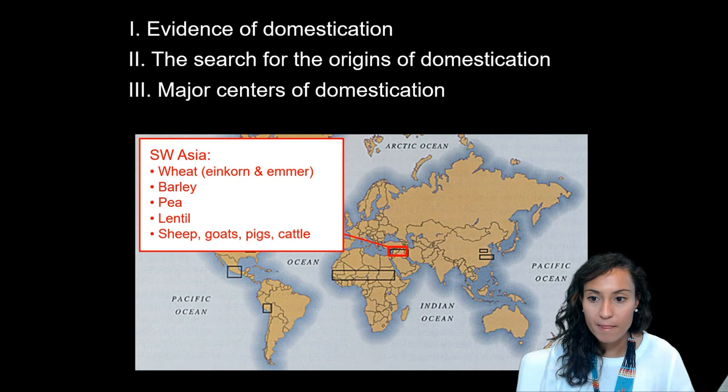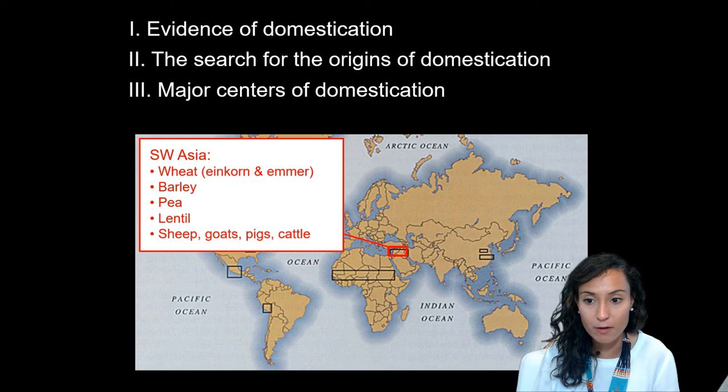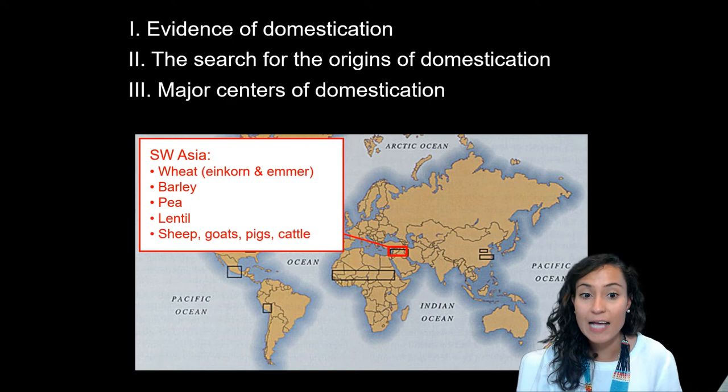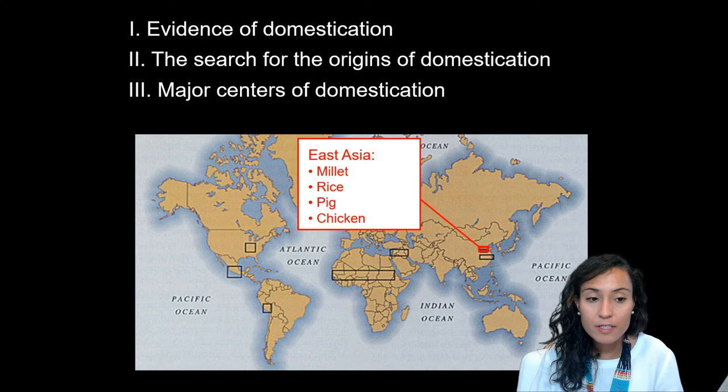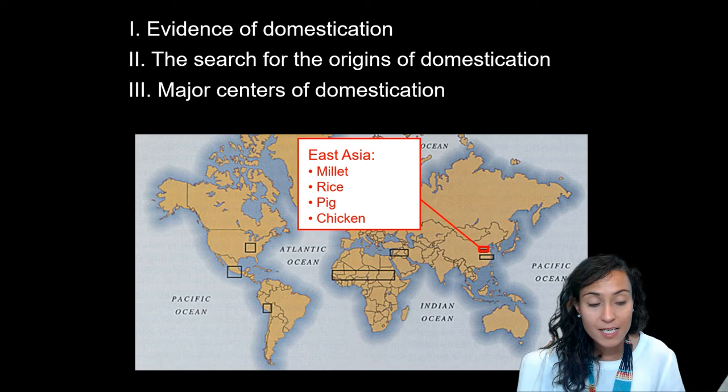There are six major centers of domestication across the globe. As discussed in Lecture 3.2, Southwest Asia has the earliest archaeological evidence, particularly crops like wheat, barley, and lentils, as well as animals like sheep, goat, and pigs. Another early area is East Asia, where the focus was on millet and rice, along with the domestication of chickens and pigs, rather than wheat.